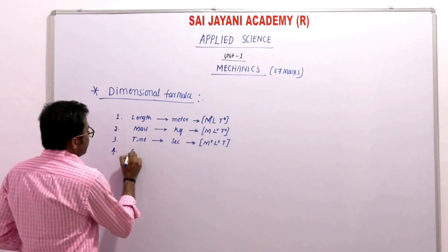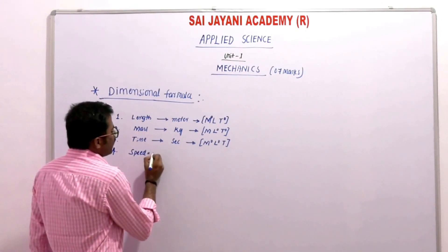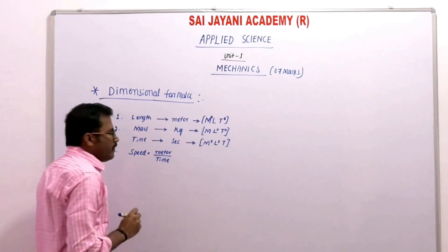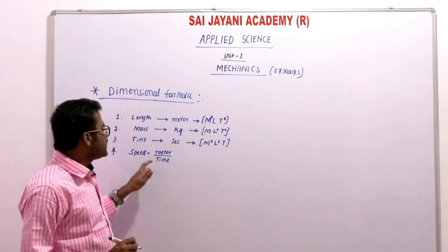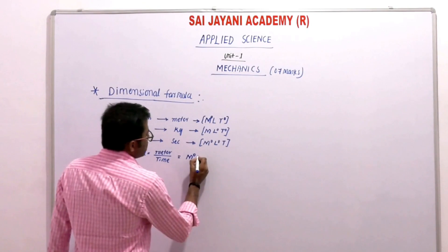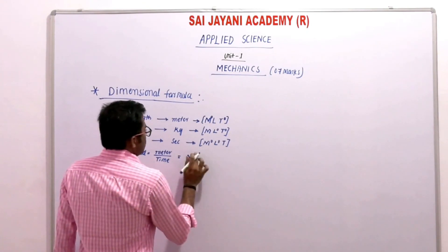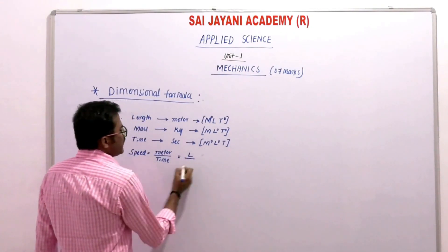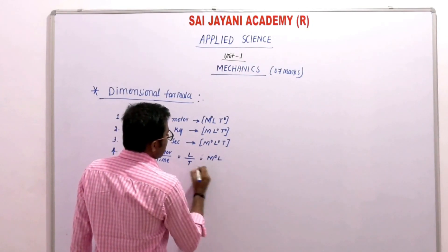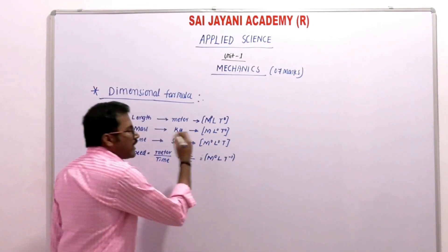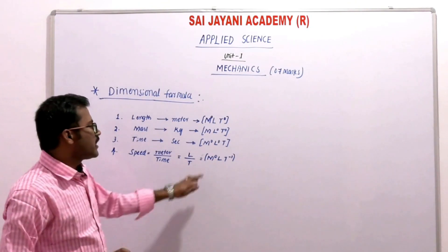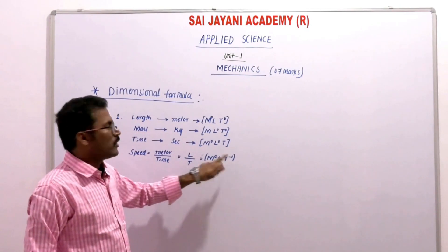Next physical quantity is speed. Speed is the ratio of distance by time. Distance has the SI unit meter, so it is represented by L, and time is represented by T. There is no mass in this quantity. Since time is in the denominator, it becomes T to the power minus 1. So the dimensional formula for speed is M⁰ L T⁻¹.